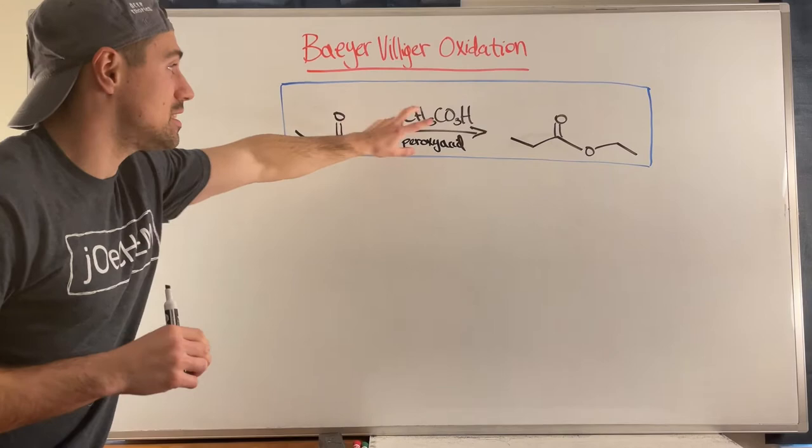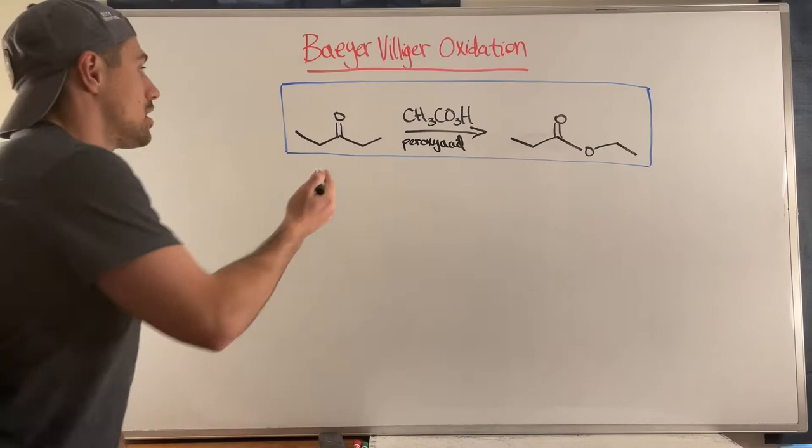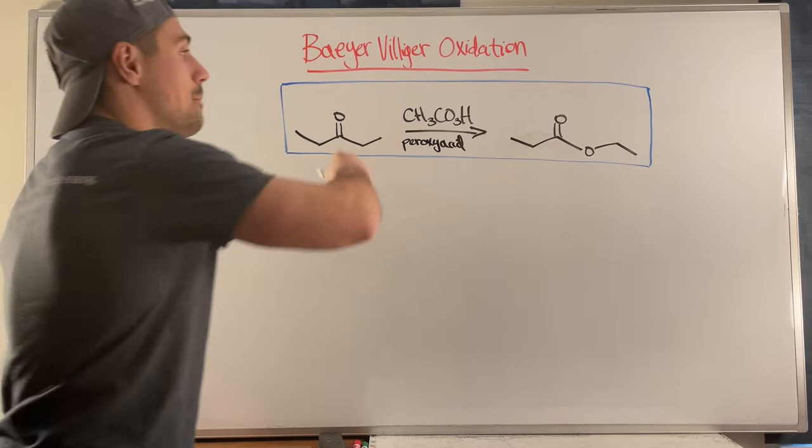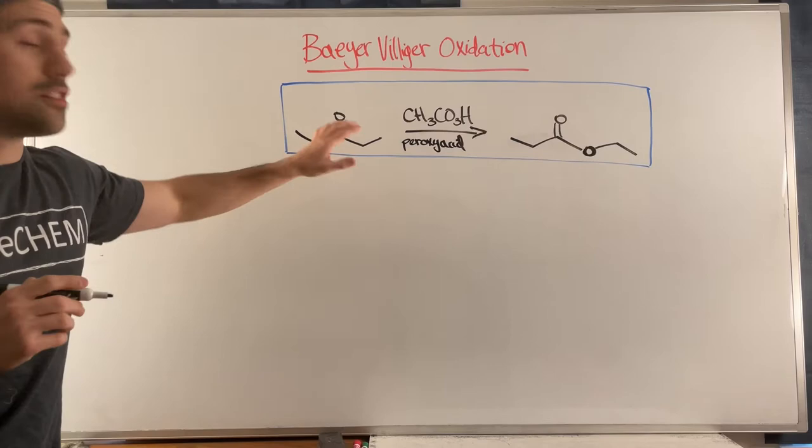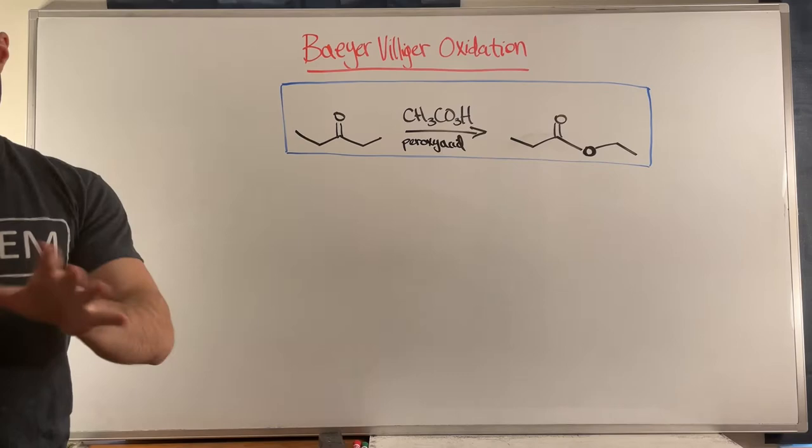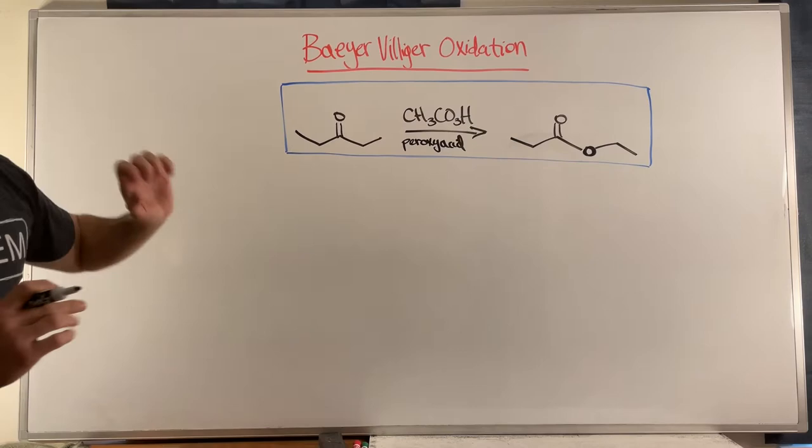What you get is you actually insert an oxygen next door — alpha — to your carbonyl, whether that be a ketone or an aldehyde. Here we have a symmetrical carbonyl, but I'm going to show you how to handle asymmetric situations, where you have to make a decision about which side. But let's step through this mechanistically first.